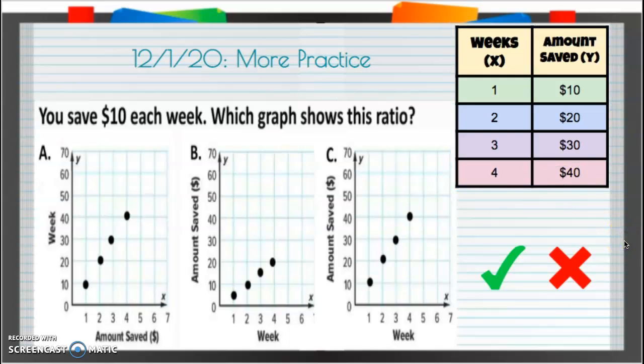Alright, now let's see if this is what we have graphed. The first one, x-coordinate is 1, y-coordinate is 10. So we go over 1, up 10. Yes, we do. So we went over 1, we went up 10. Let's take a look at the next one. We go over 2, up 20.